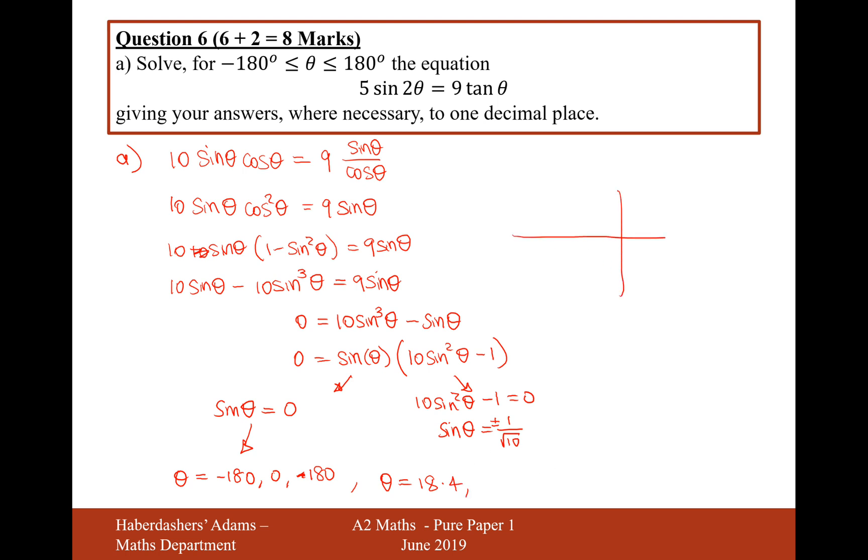And then to get the next solution, because remember the sine curve, if I draw the sine curve in between minus 180 to 180, if I've got an output of 1 over root 10, then I've got my 18.4 solution here. But my second solution will be all the way up here. So I need to do 180 minus it. So 180 minus answer. And that will give me 161.6.